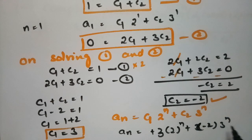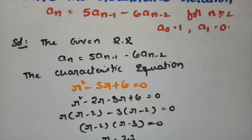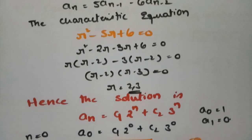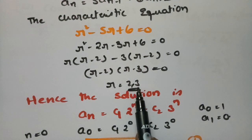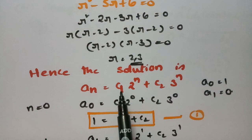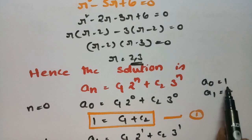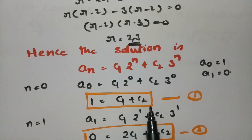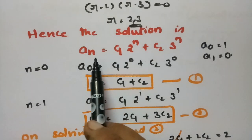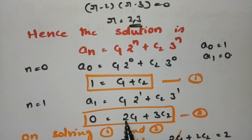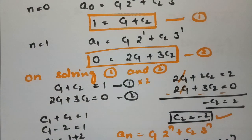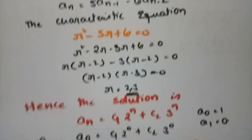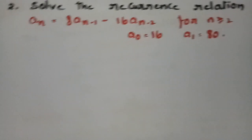We got C1 = 3 and C2 = -2. Hence the solution is An = 3·2^n - 2·3^n. To summarize: the characteristic equation was R² - 5R + 6 = 0; roots are real and distinct (R = 2, 3); general solution An = C1·2^n + C2·3^n; with A0 = 1 and A1 = 0, we get C1 = 3 and C2 = -2.